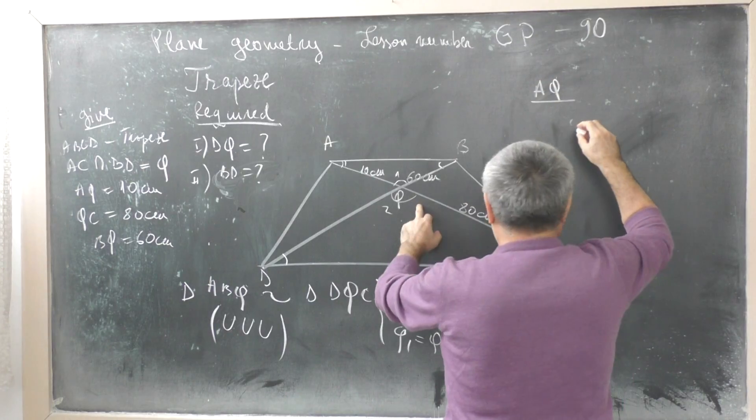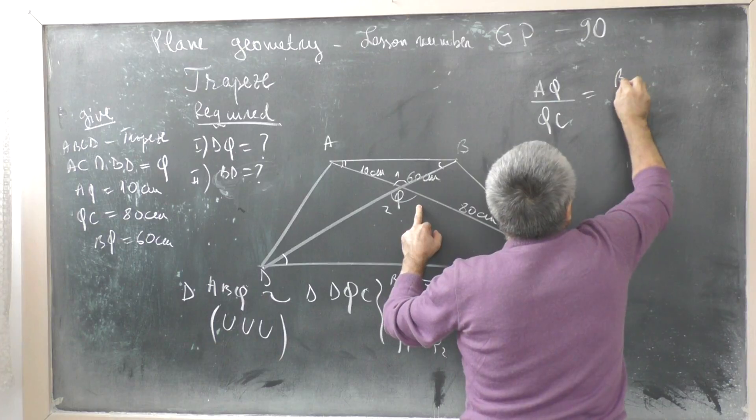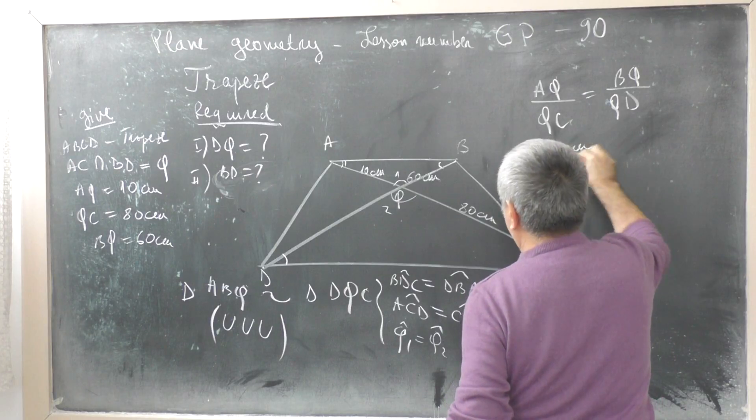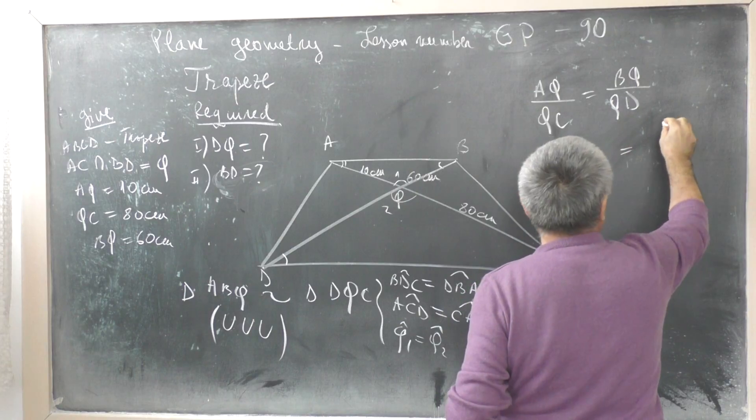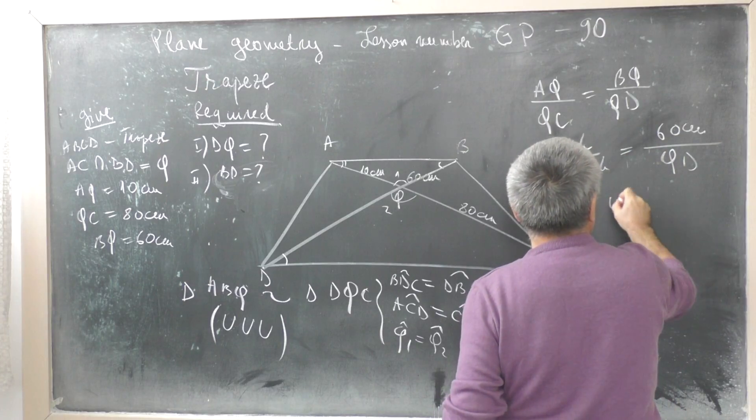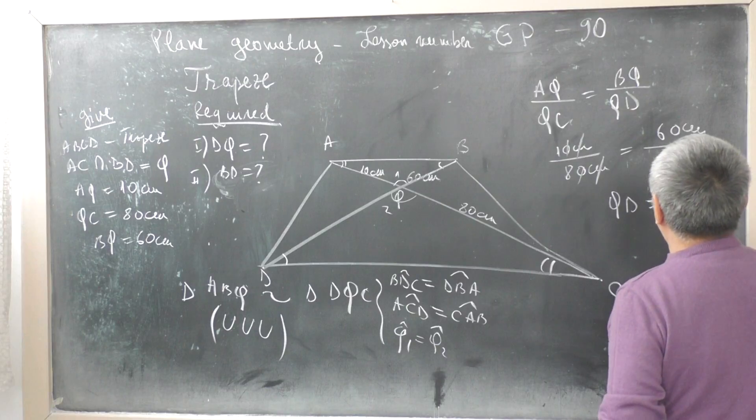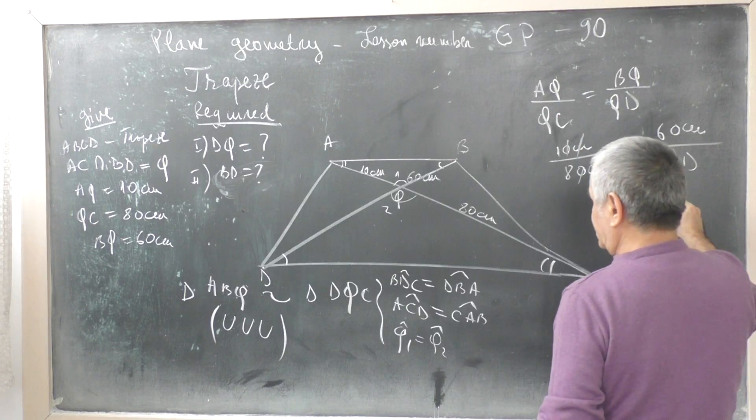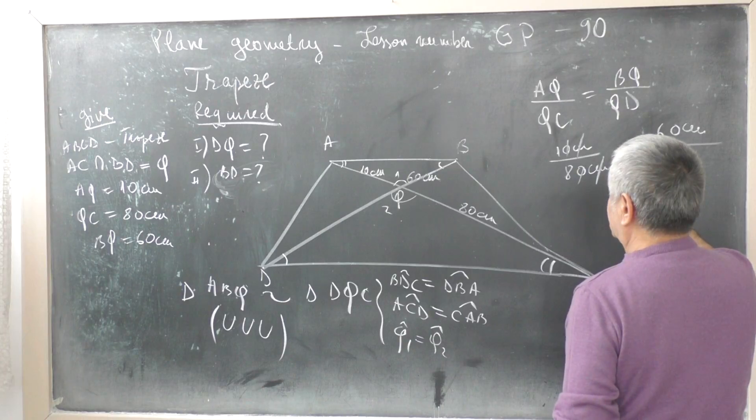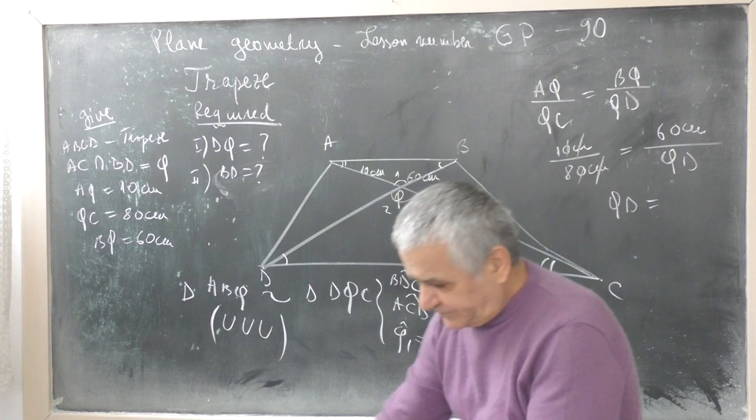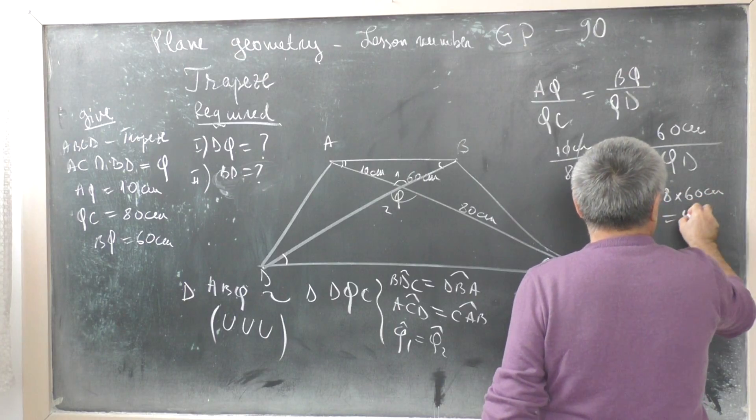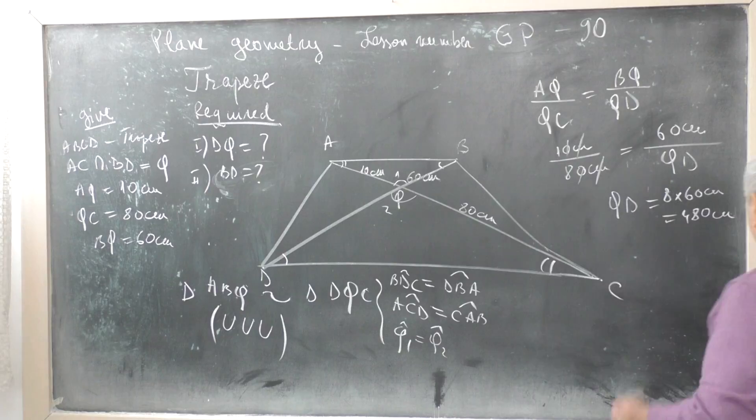AQ divided by QC equals BQ divided by QD. AQ 10 cm divided by QC 18 cm equals BQ 6 cm divided by QD. QD equals 8 multiplied by 60 cm, 480 cm.